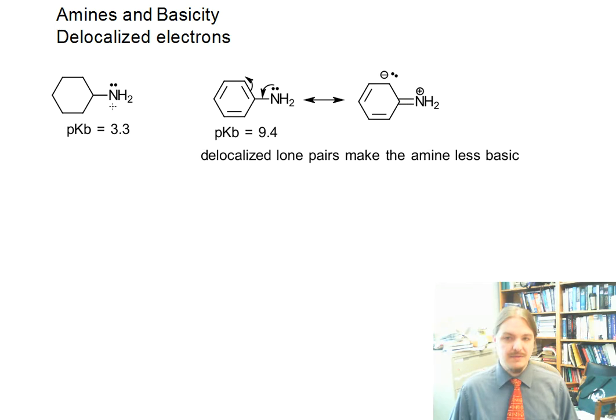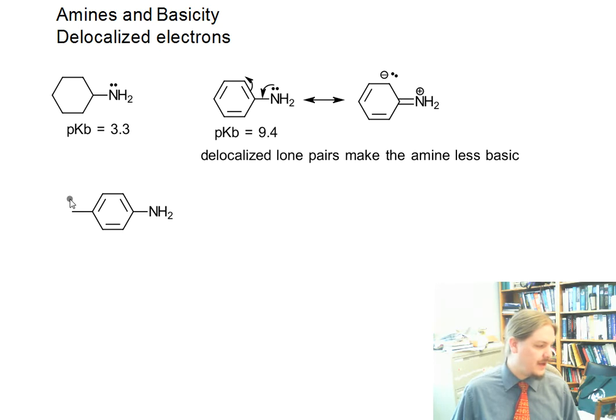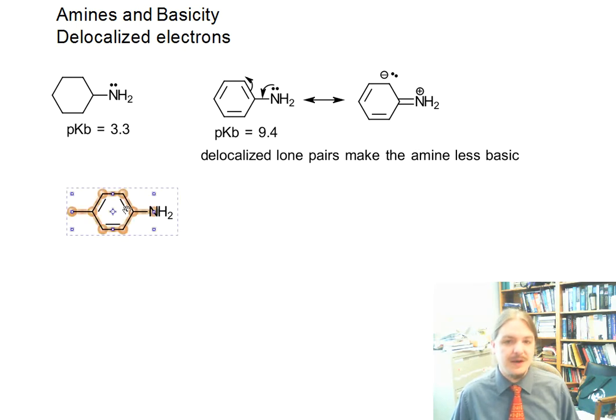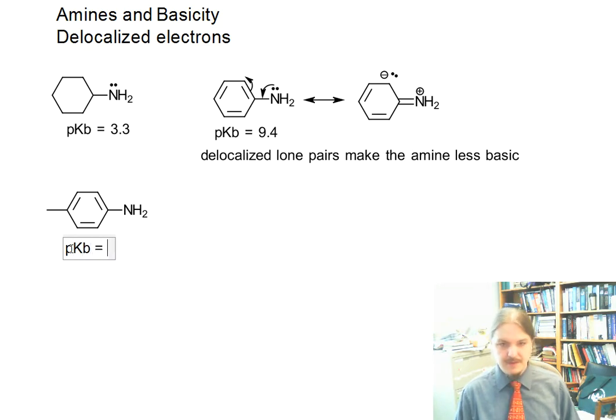And there are other effects on this as well. So other substituents on aniline can change the pK value. So for example, para-methyl aniline has a pKb of 8.9. So it's a little bit more basic, and that probably isn't surprising because the methyl group is electron donating.